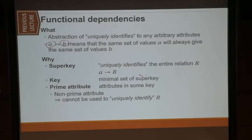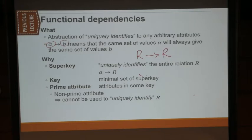We can define a superkey: it will uniquely identify the entire relation. At the very least, you will have the trivial superkey R to R — this is always true. Because we're talking in terms of sets instead of the actual table, this functional dependency is trivially true. For tables, if you do not specify any primary key, there can be duplicate values. A table without any constraint is a multi-set, not a set.